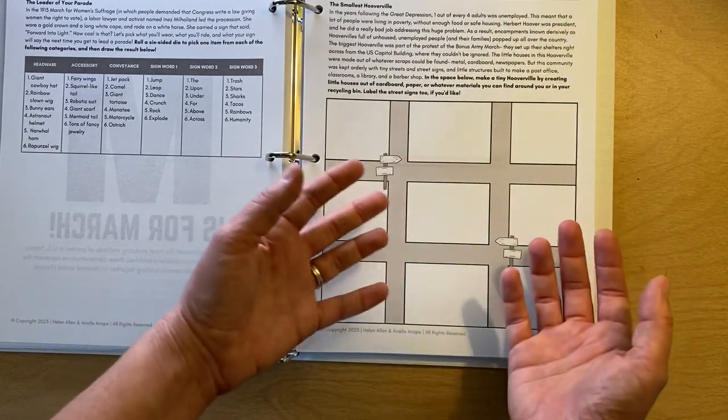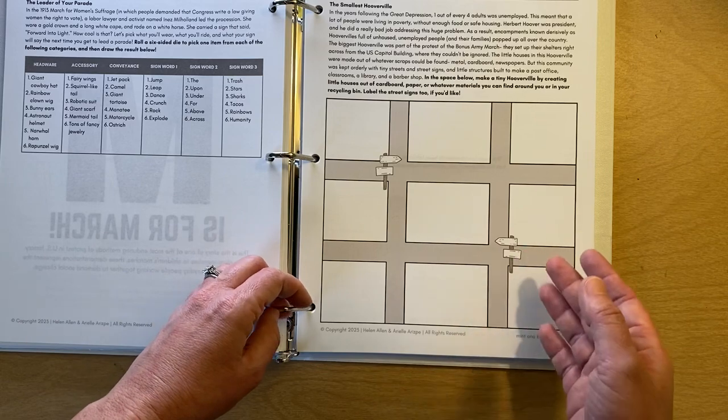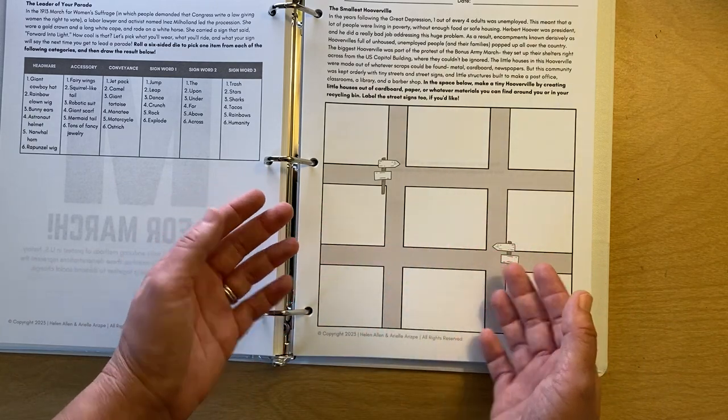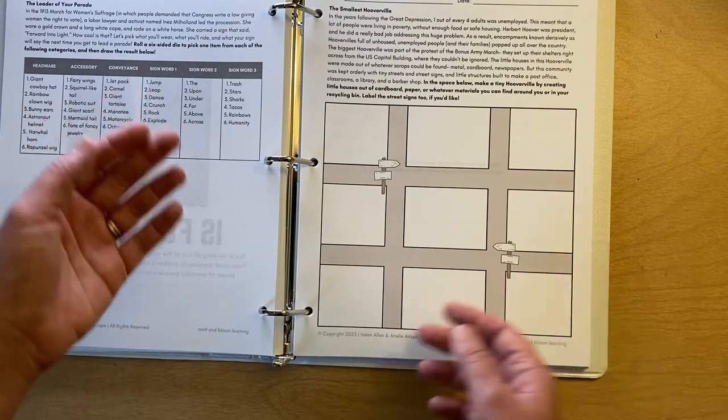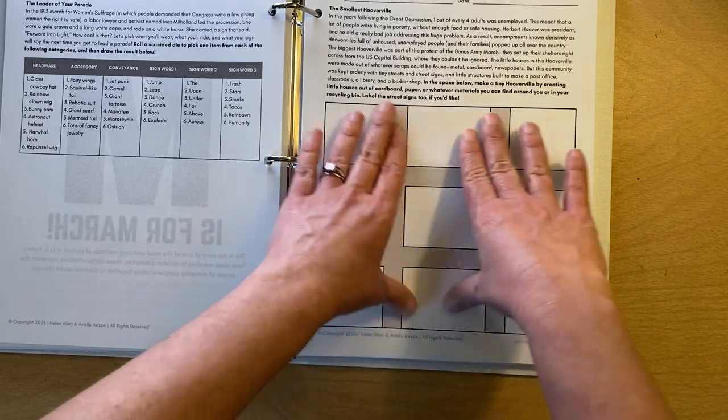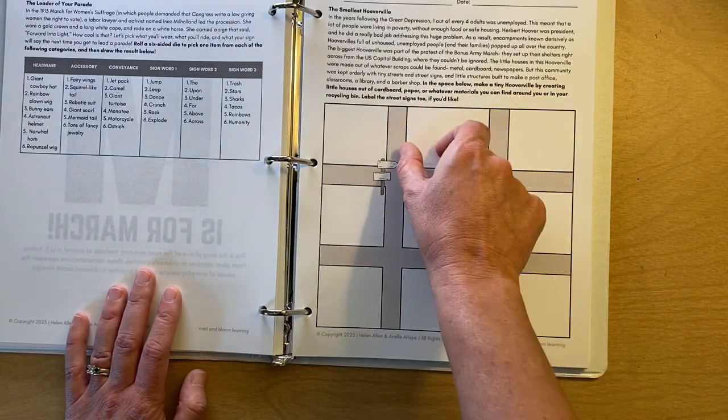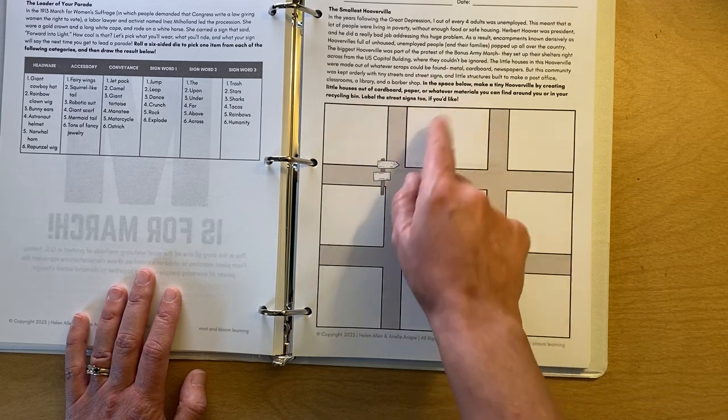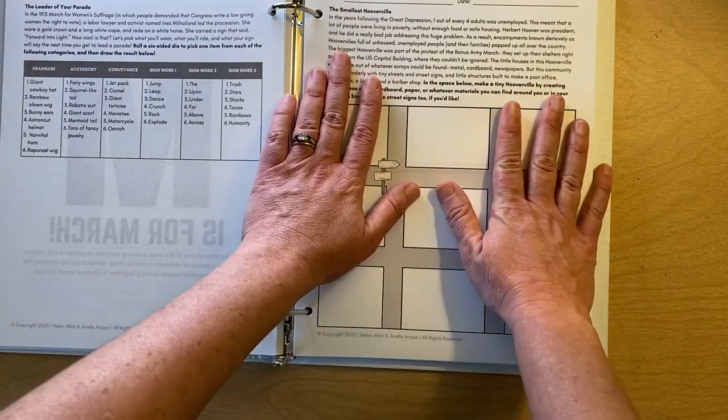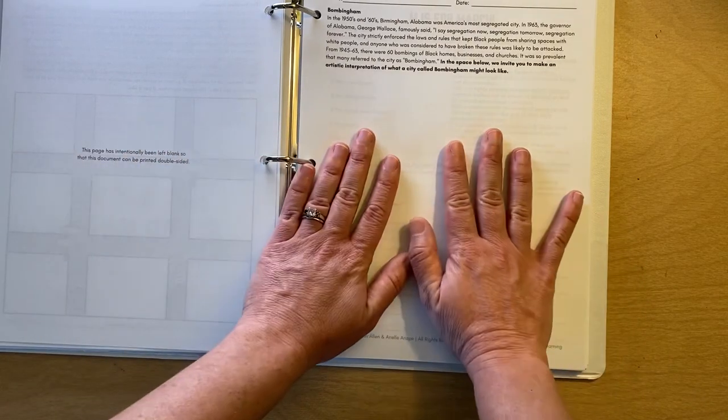Okay. We learn about Hoovervilles in this chapter too as part of the Bonus Army March, and Hoovervilles were the housing camps that were sprung up in cities to house people who had lost their homes and jobs and didn't have a place to live. Full families lived in them, and they were made with whatever materials the people could find. You know, scraps of tin, cardboard, scraps of wood, pallets, you know, all sorts of stuff like that. So in that spirit, we invite kids to make on this, this is a grid of a city. These are the little streets. So like, this would be like a block. Make a tiny three-dimensional house out of stuff that you find around you or in your recycling bin that is a, the smallest Hooverville. Because we'll learn about the biggest Hooverville that was in Washington, D.C. as part of this march and protest.